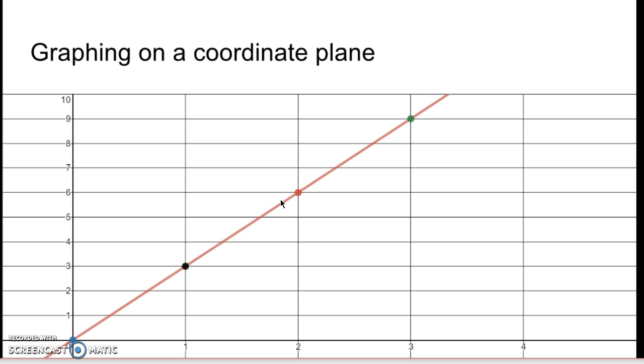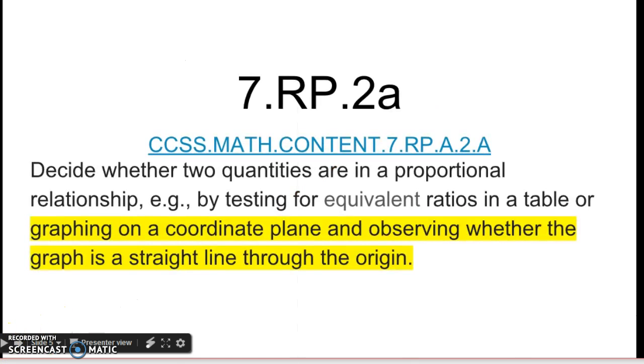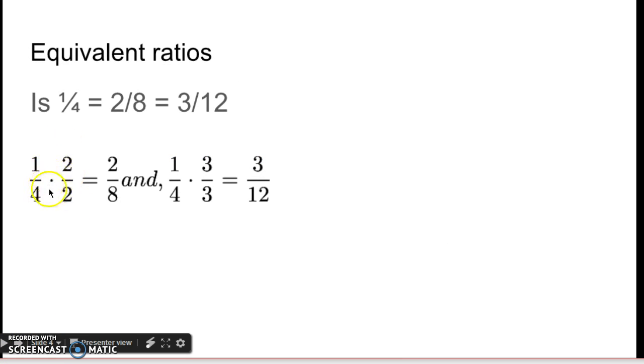It is a straight line starting at 0, 0. So that's the two things: Is it a straight line that goes through the origin? And are the ratios equivalent?